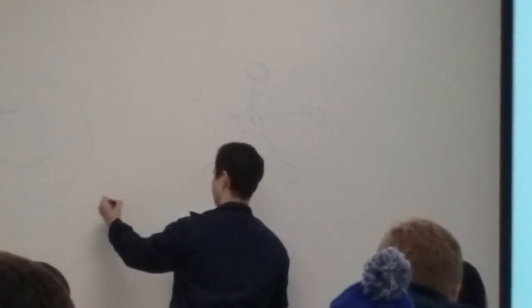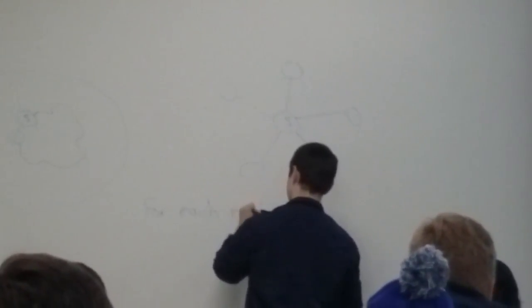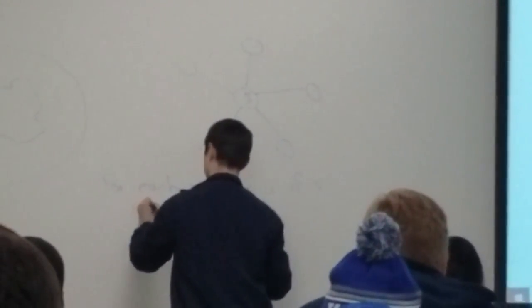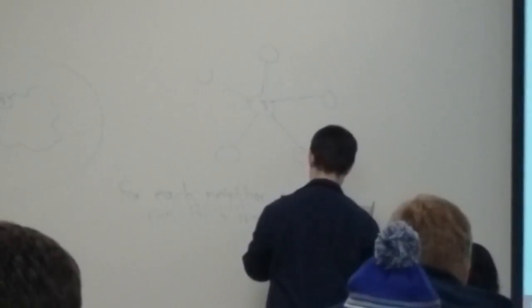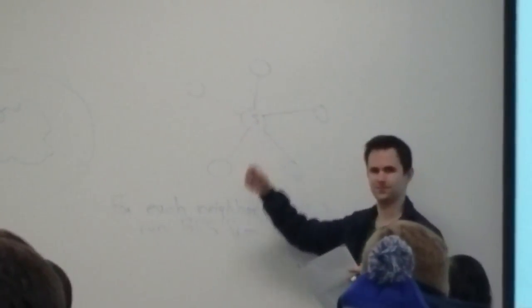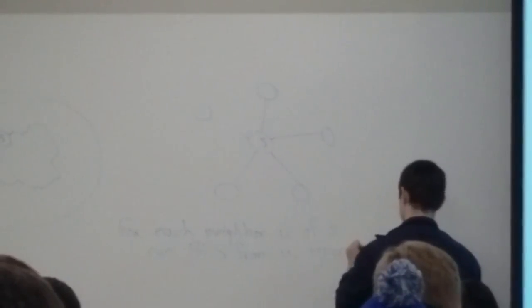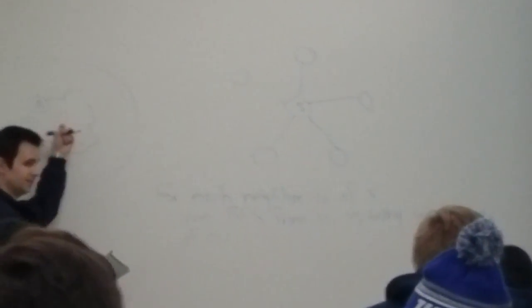To put some pseudocode here: for each neighbor of S, call it U, do a BFS starting at node U, ignoring the edge that directly connects U and S — just pretend that edge is not in the graph, so the BFS won't immediately say of course you can get from U to S, just use that edge. Now you want to find another way to get to S. So just ignore that edge in the BFS. And while doing this BFS, if you encounter S, then that's a cycle like in this picture.